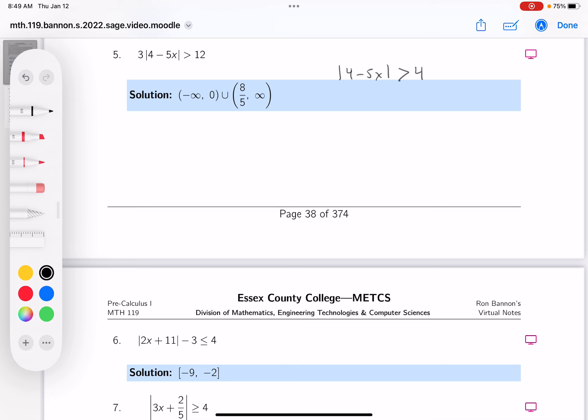I need to understand what this says. It says the absolute value of that thing, 4 minus 5x, must be greater than 4 from the origin, which means 4 minus 5x must be less than minus 4, or the 4 minus 5x must be greater than 4.